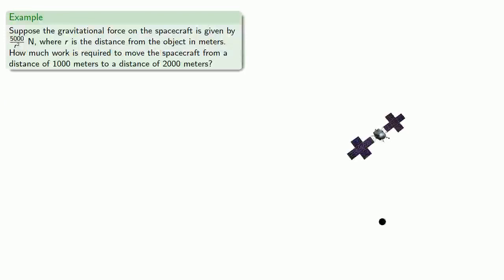For example, suppose the gravitational force in a spacecraft is given by 5,000 divided by r squared Newtons, where r is the distance from the object in meters. How much work is required to move the spacecraft from a distance of 1,000 meters to a distance of 2,000 meters?